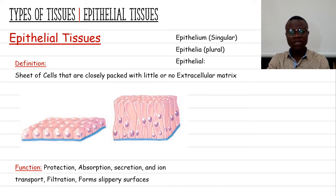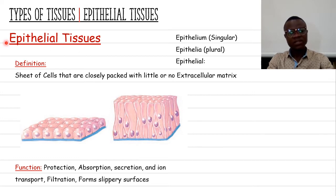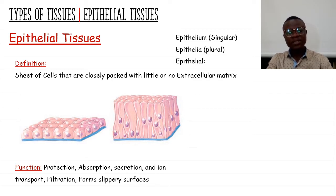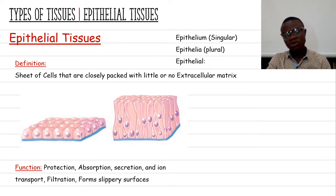The adjective form is 'epithelial,' so when I use 'epithelial tissue' I will use either the singular or plural noun, and when I use 'epithelial' as an adjective I don't need to add 'tissue' separately. Take note of that as we go through this tutorial.